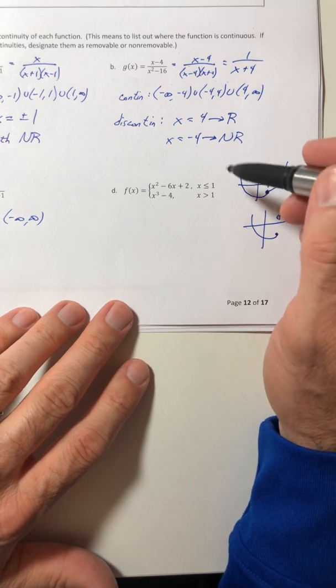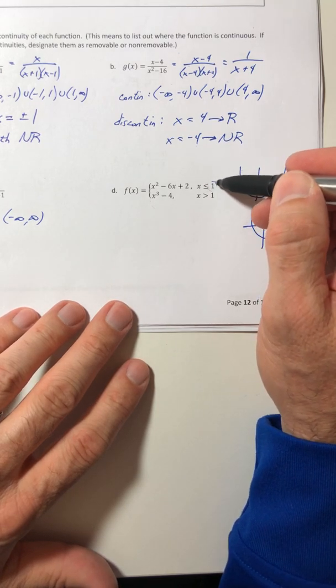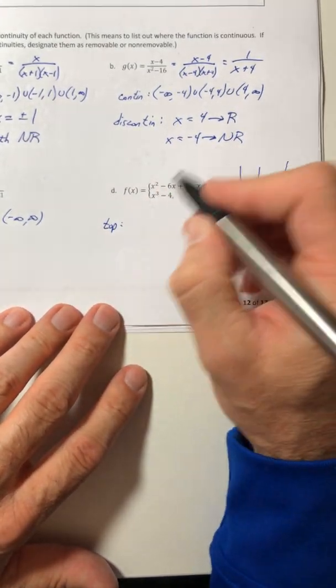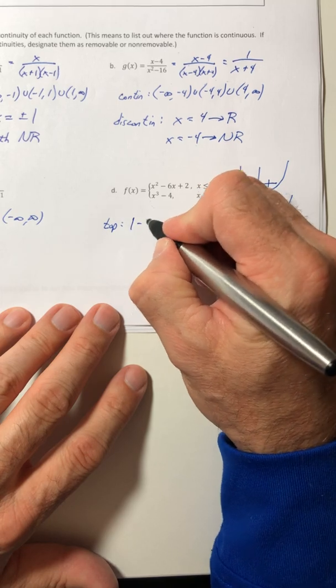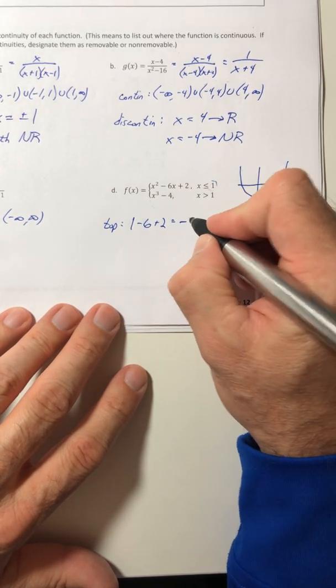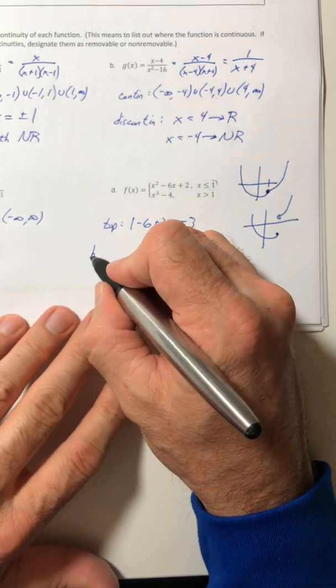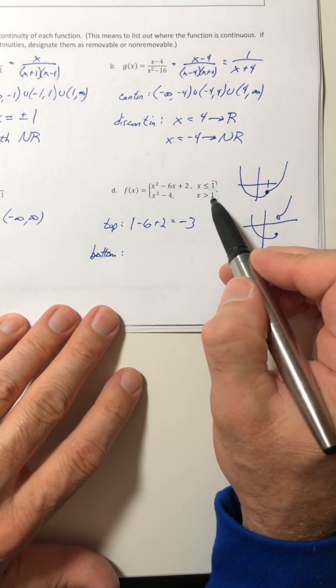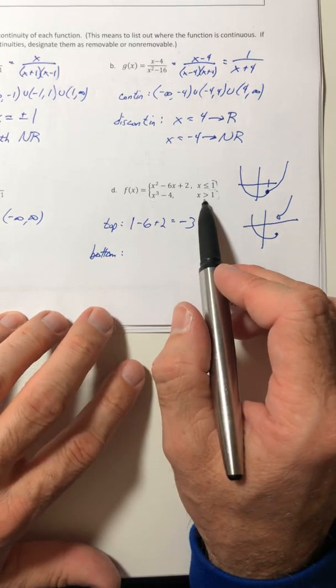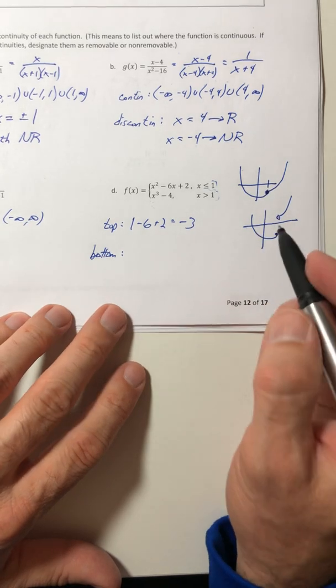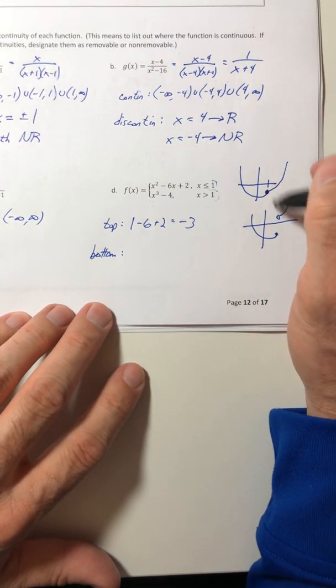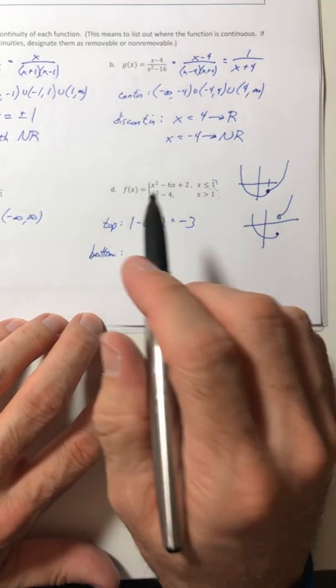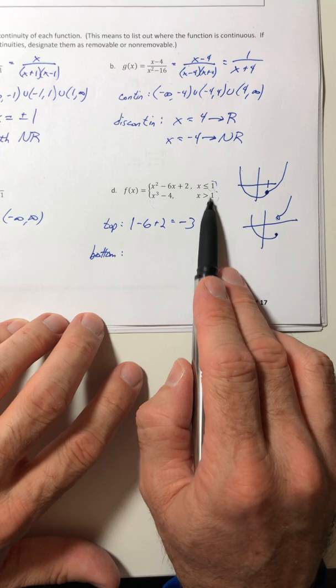So let's find out if that happens. To do that, just take whatever number this is. In our case, the 1, plug it into the top. So 1 minus 6 plus 2 gives you negative 3. Now you're going to take that same number and plug it into the bottom. Don't freak out and be like, well, hey, it says it doesn't actually equal 1. I know. But we're trying to see if the open circle and the closed dot are going to be at the same place or not. The only way to do that is to plug the number into both.